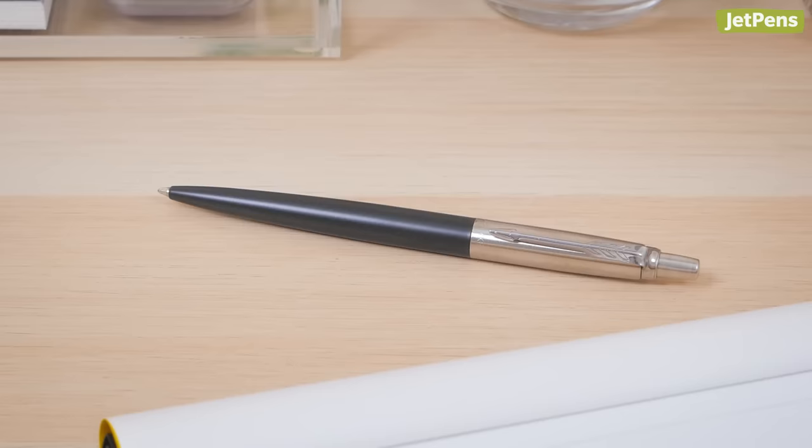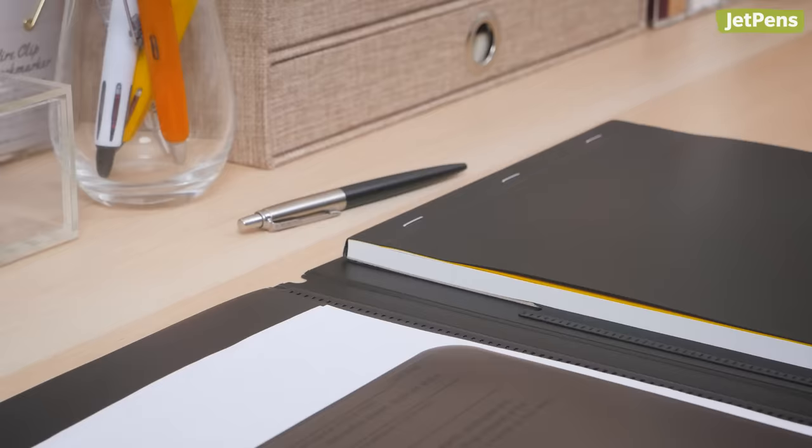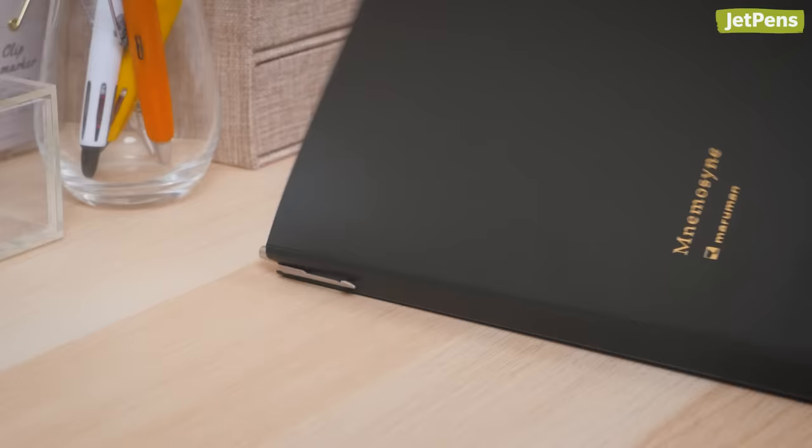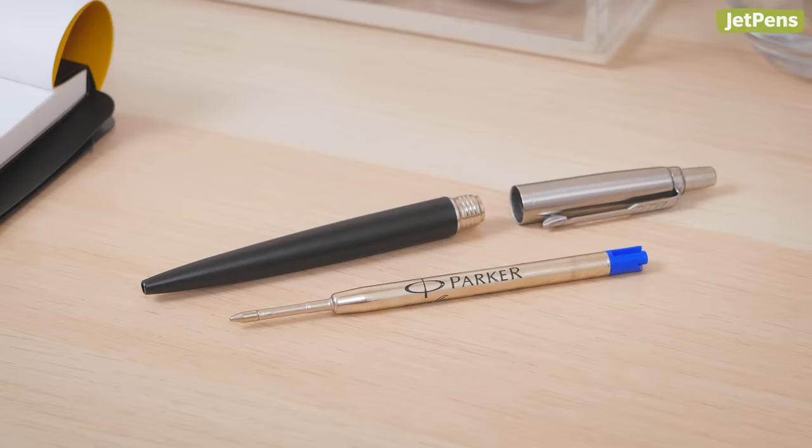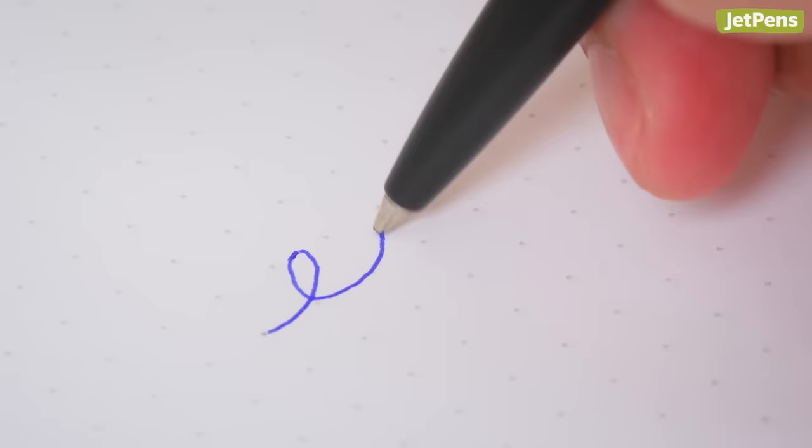The Jotter is another iconic ballpoint pen, introduced in 1954. In the first year of development, Parker sold 3.5 million of these pens. With its thin metal body, the Jotter is perfect for business professionals or as a pocket pen. Jotters use Parker's Quink Flow ink. While it's considered a low viscosity ink, it writes more similarly to a traditional ballpoint ink.